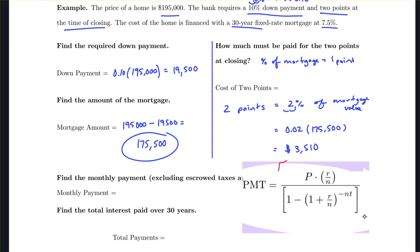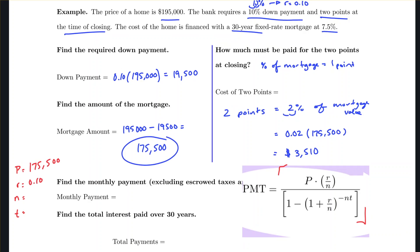Now I've copied our formula. Let me identify the values: P is the principal — the mortgage amount — which is $175,500. The interest rate was 7.5% (not 10%, which was the down payment), so converting to a decimal that becomes 0.075. There was a momentary mix-up there between the down payment rate and the interest rate.